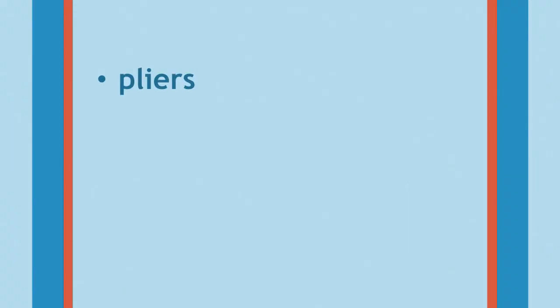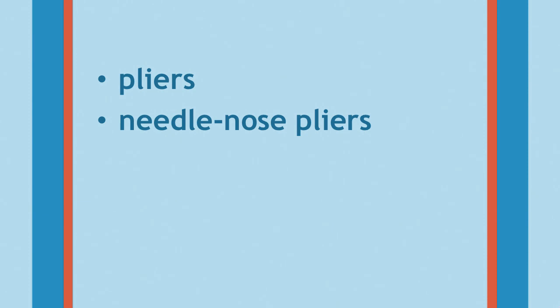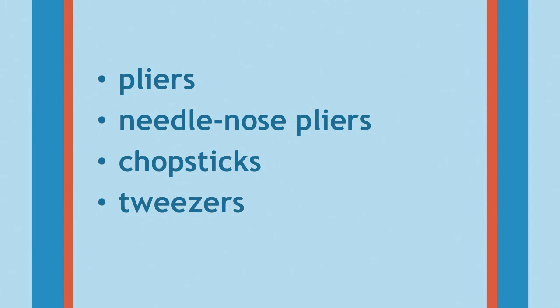So what are you actually going to do? You are going to use each tool — the pliers, the needle nose pliers, chopsticks, and tweezers — to move each one of the foods into a cup for 30 seconds. You're going to need someone to time you, a partner who can give you 30 seconds as you move each food with each tool.